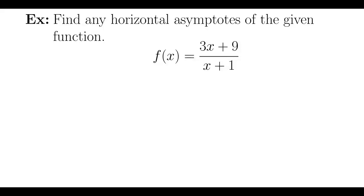Let's find the horizontal asymptote of the rational function 3x plus 9 over x plus 1. Okay, let's compare the degrees.